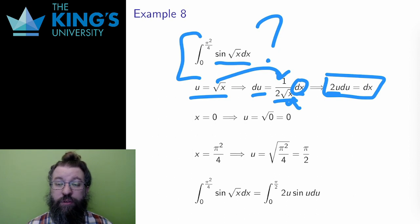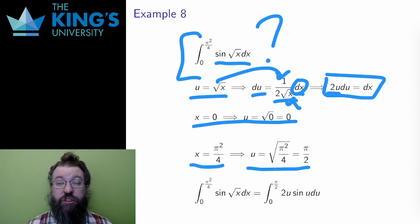I also need the new bounds. If x is zero, then u is also zero, since root zero is zero. And if x is pi squared over four, then u is the square root of that, which is just pi over two.